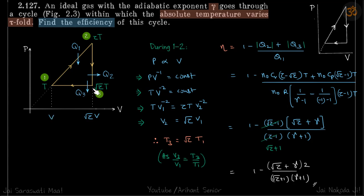Because we know the ratio of volumes, we can find the ratio of temperatures. This is an isobaric process, so if this is V and this is √τV, then if this is T, this is √τ times T. Now we know all the temperatures.